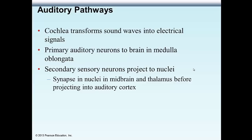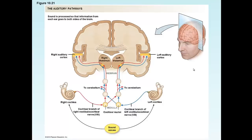The auditory pathway is as follows: the cochlea transforms sound waves into electrical signals; primary auditory neurons travel to the brain in the medulla oblongata; then the secondary sensory system goes up into the midbrain, then the thalamus, before reaching the auditory cortex on both sides of the brain. A sound perceived on the left side crosses at the medulla oblongata and is sent to both sides of the cerebellum and cerebrum. We actually perceive sound heard in one ear on both sides of our brain, for integration and processing of what those sounds represent.